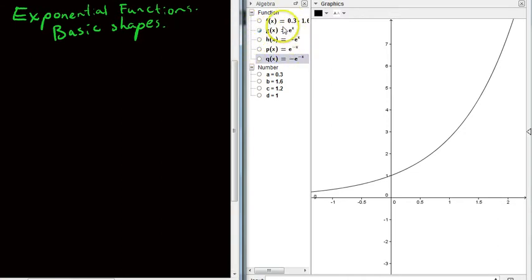So first of all, we just need to talk about the four basic shapes. So there's four basic shapes. We'll just go through them each in turn. Now the first one is the one you're looking at right here. That's y equals e to the power of x.